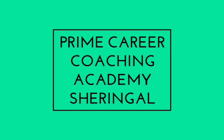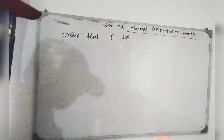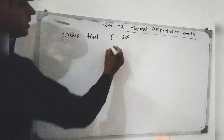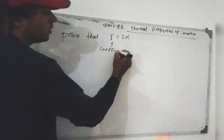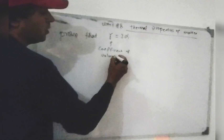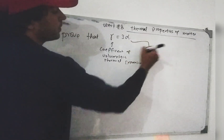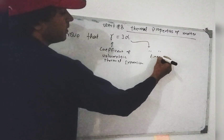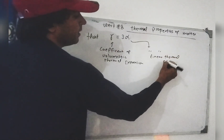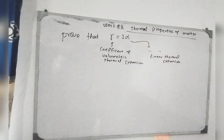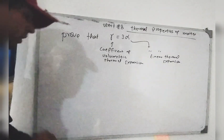In this lecture, I am going to prove that gamma is equal to 3 alpha. Here, alpha is the coefficient of linear thermal expansion. So how can we prove it?